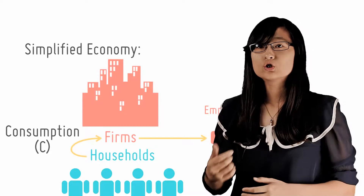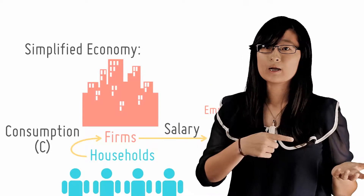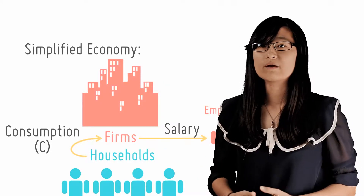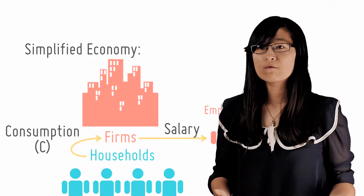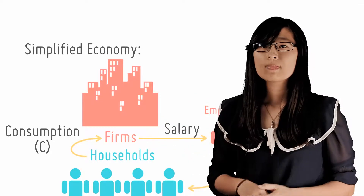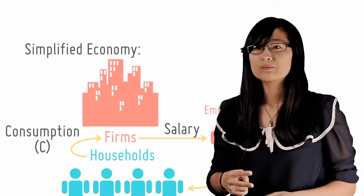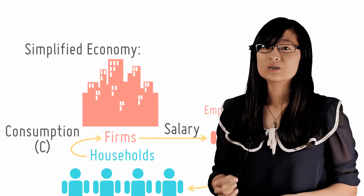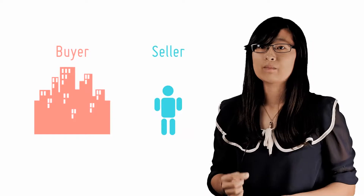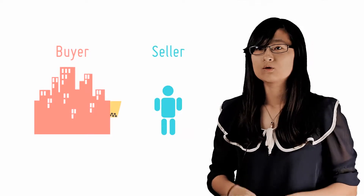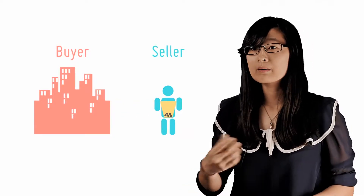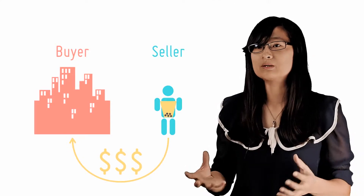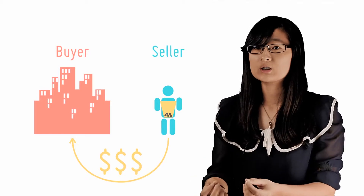There are two important principles that underlie the circular flow. The first is that in every economic exchange, the seller receives exactly the same amount that the buyer spends. So when I buy bubble tea, for example, all the money I use to purchase the drink goes to the shop. No money inexplicably disappears as it passes from my hands to the cashier.